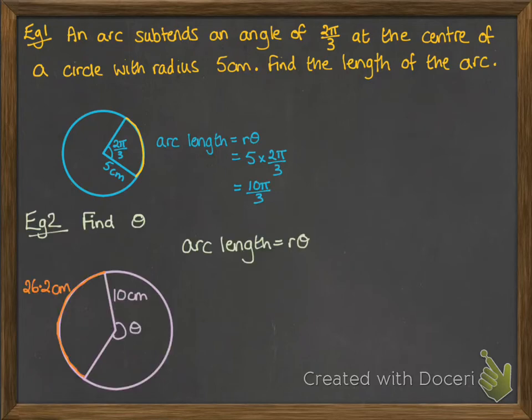Okay, next example. We are going to find theta, given this information in the diagram. So we know that the arc length is 26.2. And we're going to work out theta of the major arc, given that we know the minor arc is 26.2 centimetres.